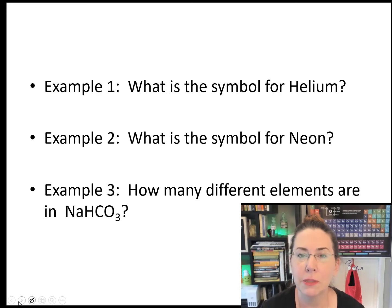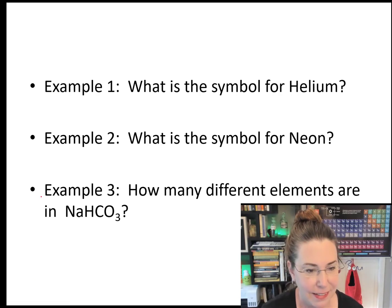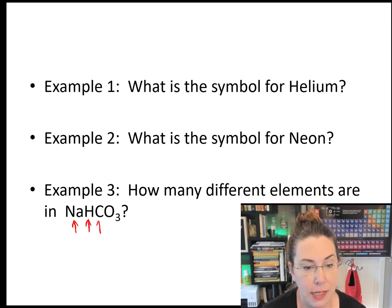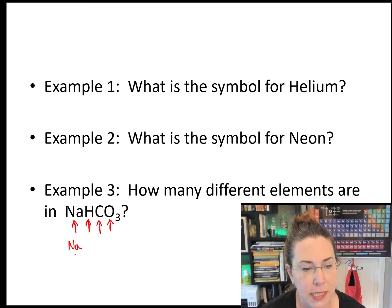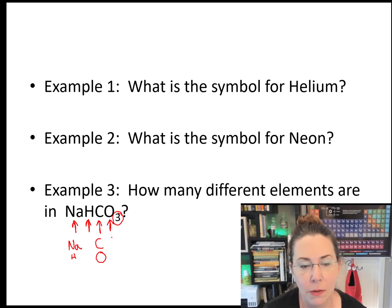How many different elements would you say are in sodium hydrogen carbonate? The answer is there are four different elements in this substance. We count the capital letters to tell us how many elements are in the compound. The first is Na, which is sodium. Next we have hydrogen, then carbon, and beside that we have oxygen. A little bit later we're going to talk about what those numbers mean, but for now, suffice it to say you have four different elements in this compound.